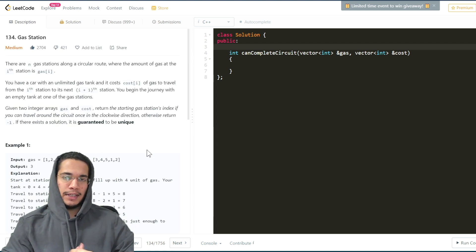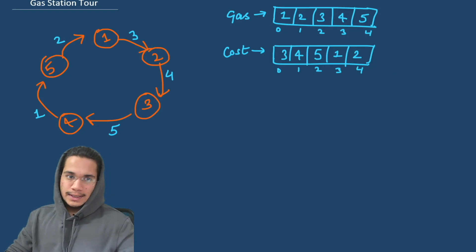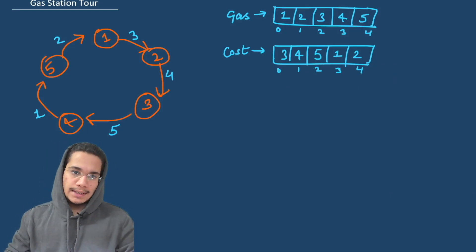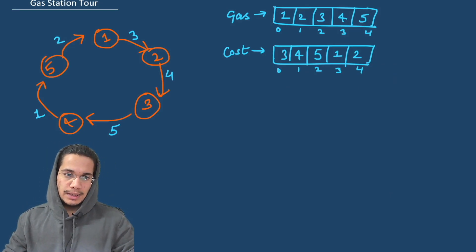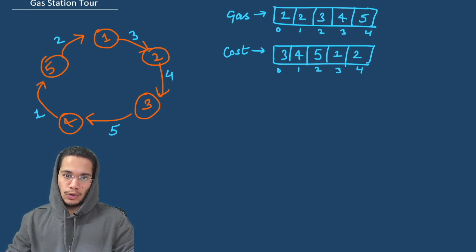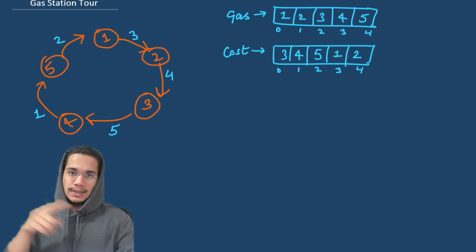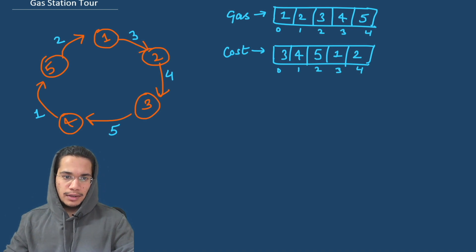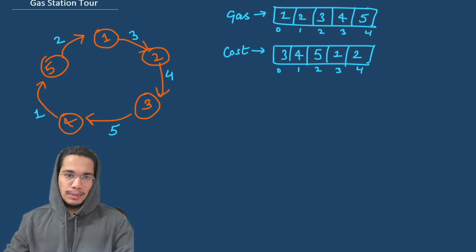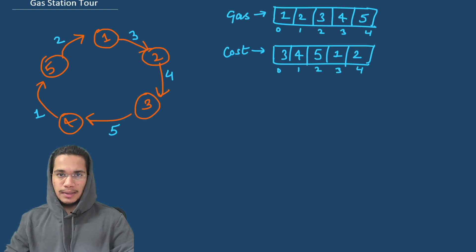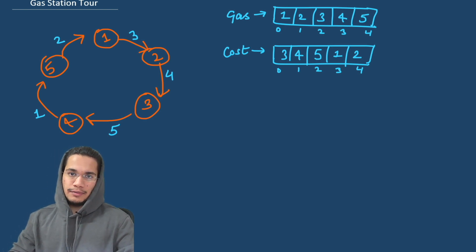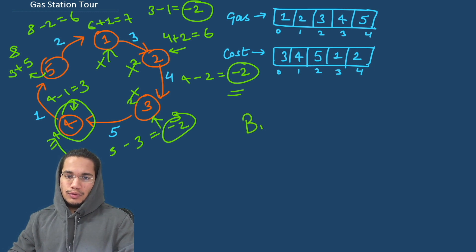Let's understand the different approaches to solve this question and then we will code it out. I have drawn the gas stations here in orange and blue represents the distance between two stations. We are given the list of gas stations as well as the cost to traverse from one to the other, and we need to find the gas station to start with to complete a full tour. The first approach that can come to your mind is to simply take every gas station as a starting point and try to check if we can make a tour — this is the brute force solution.